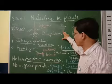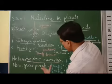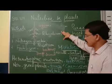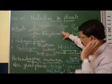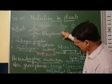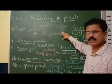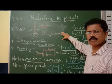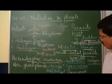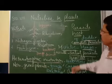So heterotrophic nutrition is the type of nutrition in which non-green plants and animals depend on other sources for their food. Green plants are autotrophs, but non-green plants like fungi and bacteria are not autotrophs. These organisms are called heterotrophic organisms. The first type is parasites.